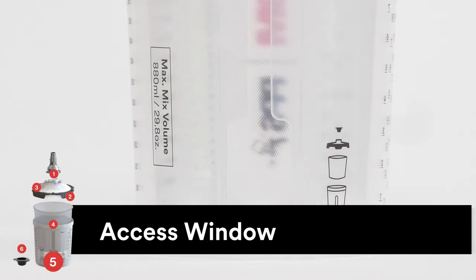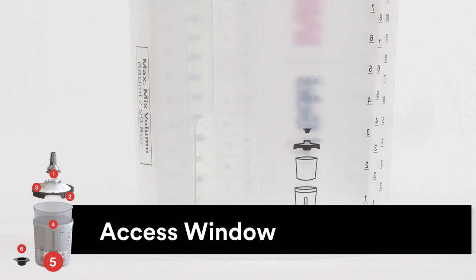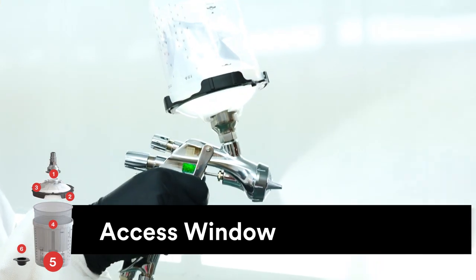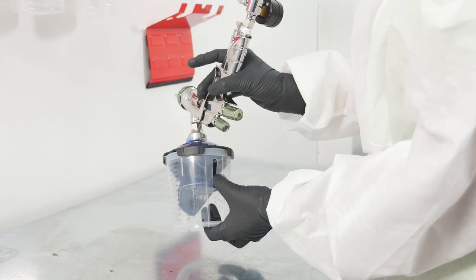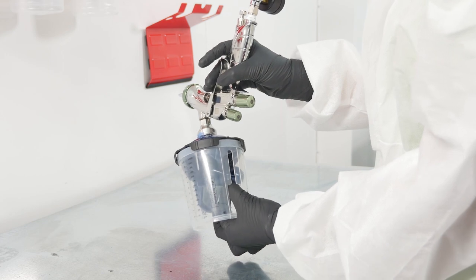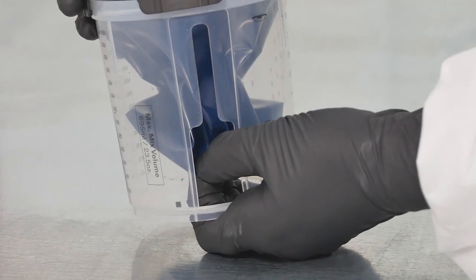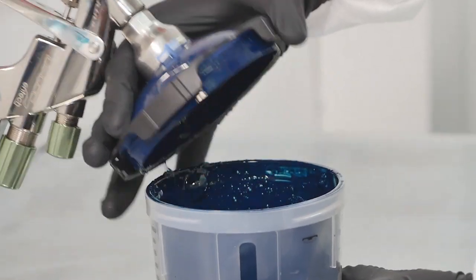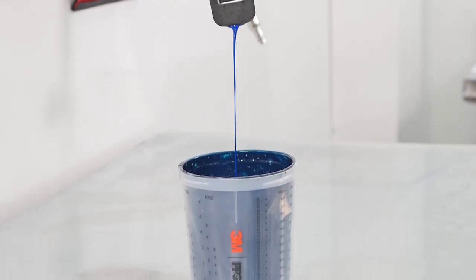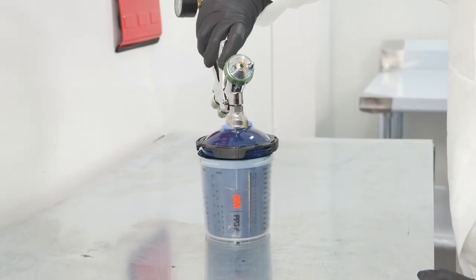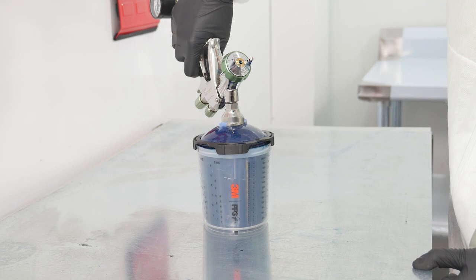The fifth feature is an access window on all 3M PPS Series 2.0 hard cups. Beyond allowing painters to better see how much paint is left in a liner, this window provides an even greater benefit. It allows users to hold the liner while removing the lid, which makes tinting, refilling and removing the lid much cleaner and easier.